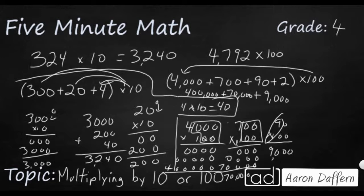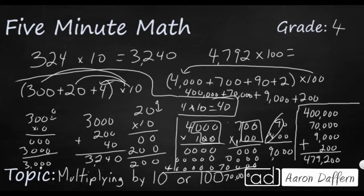And then 2 times 100 is going to be 200. So if you add up those partial products, you're going to get 479,200, which is the same thing as writing 4792 and simply adding those two zeros at the end. So that's the trick.